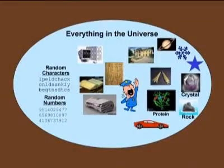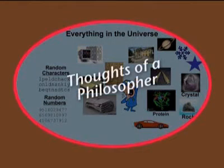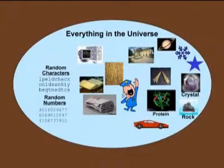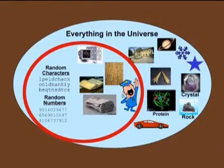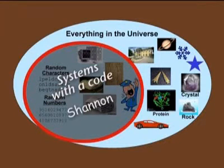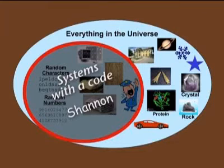You find it in many textbooks. Here you see a sort of philosopher who said everything in the universe is information — that's his definition of information. Or let me come to another definition: systems with a code. That's the definition of Shannon. Shannon is not interested in the meaning of the code. His question is only whether there are letters or numbers — random numbers or whatever. Everything like this is information in his definition.